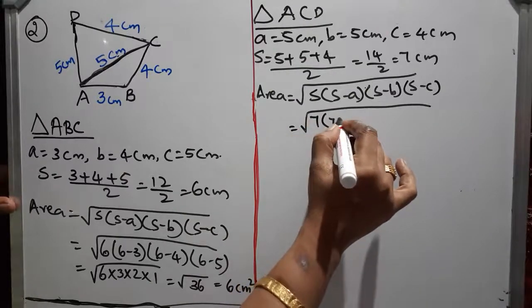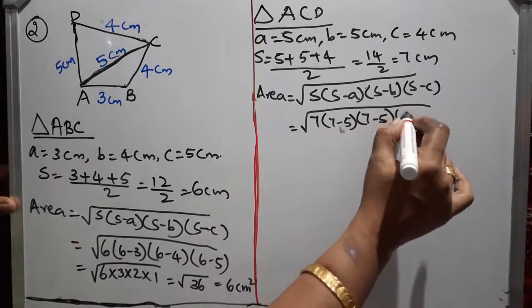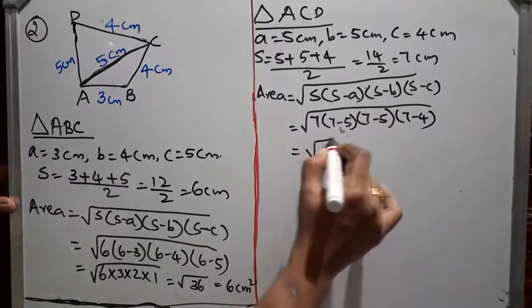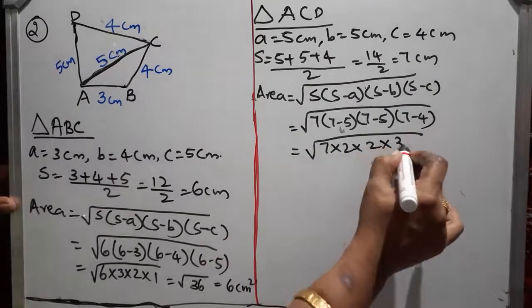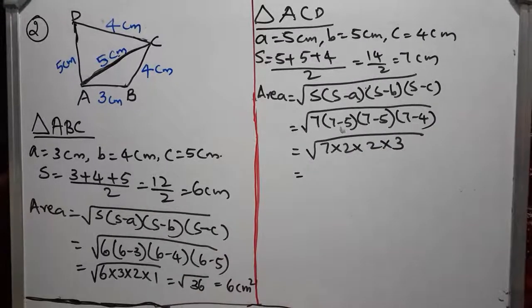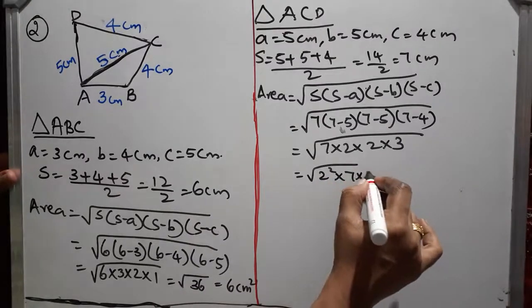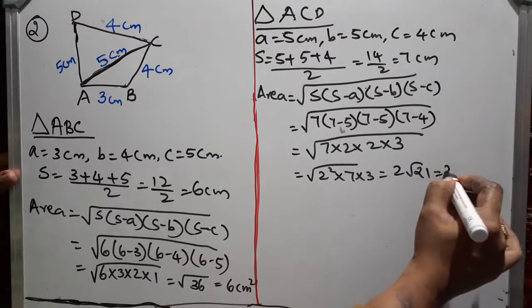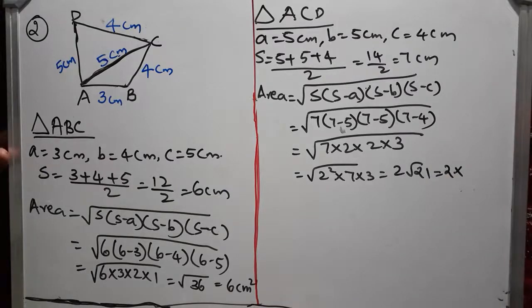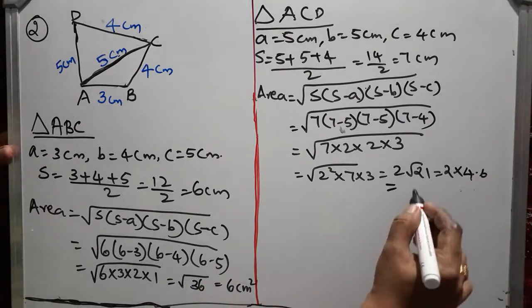Which is equal to root of 7 into 7 minus 5, again 7 minus 5, 7 minus 4. Root of 7 into 2 into 2 into 3. 2 into 2, 2 square you can get there, so you can write it as 2 square into 7 into 3 which is equal to 2 root 21. And change it as 2 into root 21. If you find in the long division method, we can get as 4.6 which is equal to 9.2 cm square.